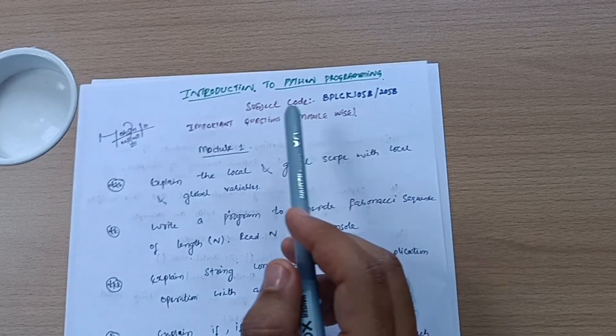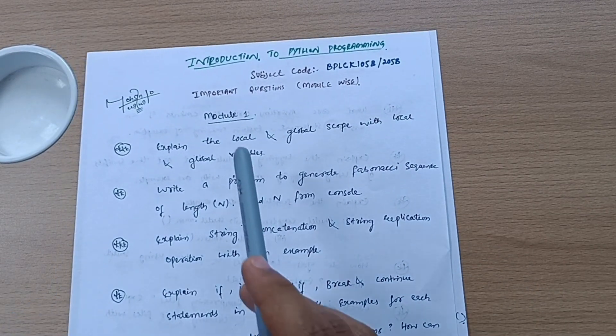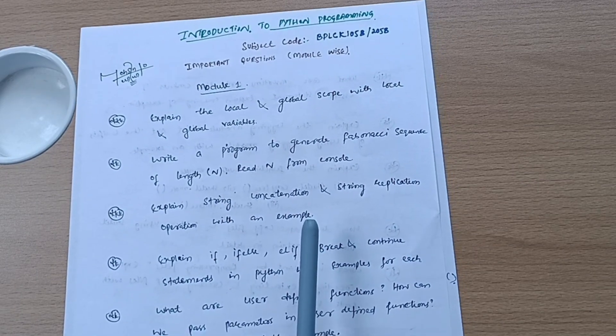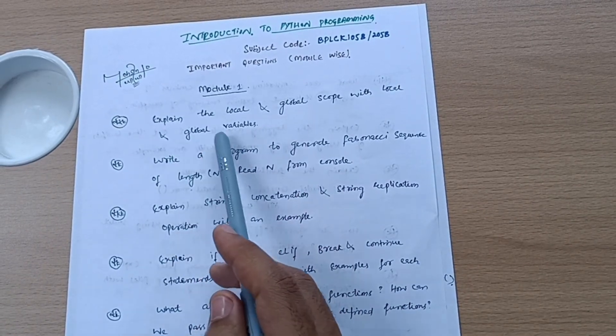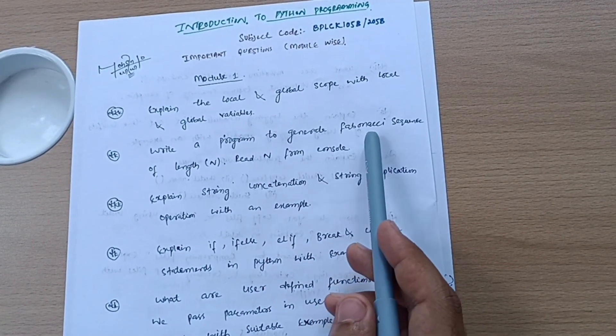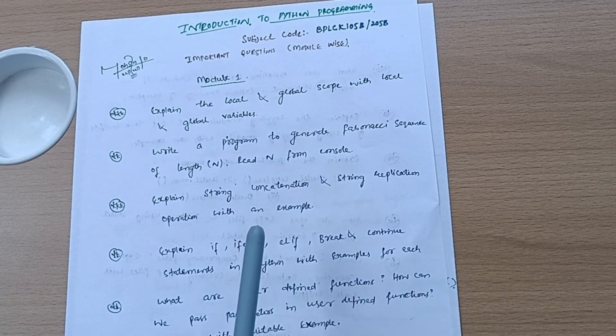Let us start with Module 1 where I have taken five questions and some programs. Explain the local and global scope with local and global variables. Write a program to generate a Fibonacci sequence of length n and read n from console.